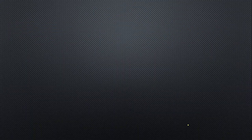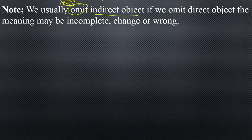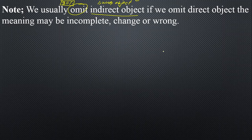One important note: we usually — and 'usually' means eighty percent — omit the indirect object. The indirect object means the living object. In di-transitive verbs we have two objects: living (indirect object) and non-living (direct object). If you want to change a verb into mono transitive, eighty percent of the time you remove the indirect object. If you omit the direct object instead, keep in mind the meaning may be incomplete, changed, or even wrong.